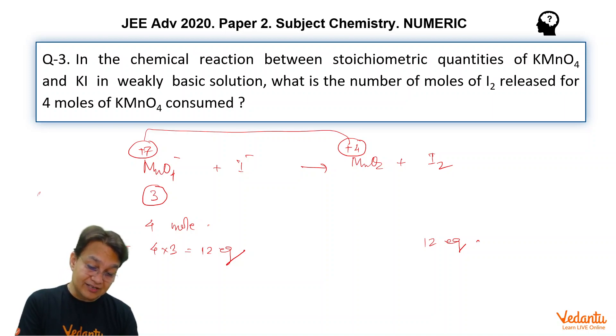And the n-factor of I2 in this reaction will be 2. Because if you see the change in oxidation number of iodine here, iodine I2 is coming from oxidation number of minus 1. So there are 2 iodine atoms in I2 and there is a change of 1 in each. So the net change equals 2.